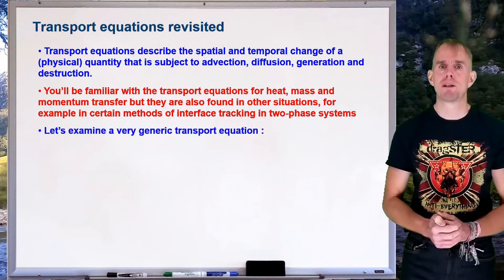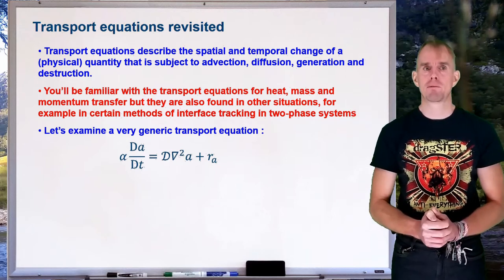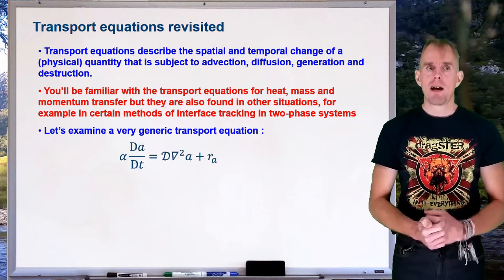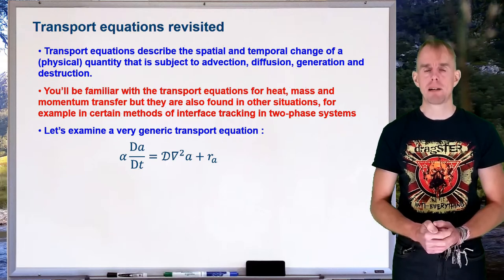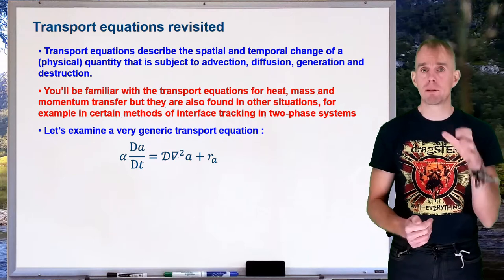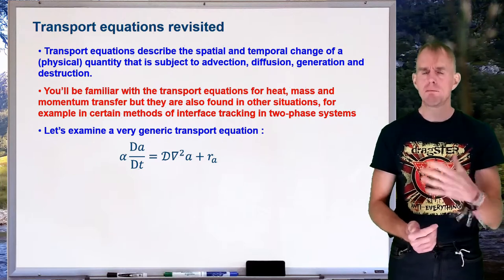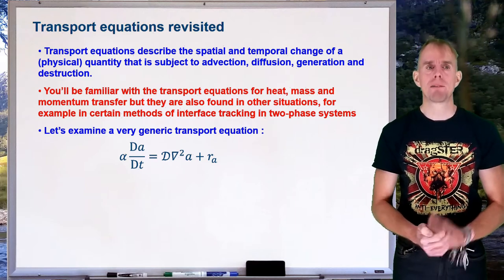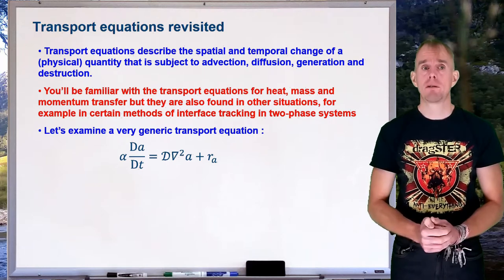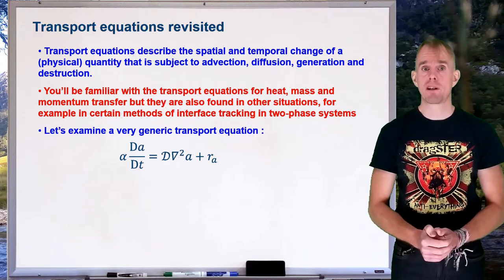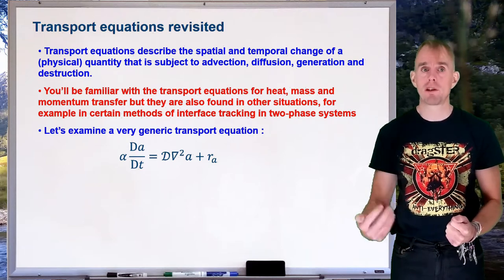Let's put on the whiteboard a reminder of what a transport equation is. There's my transport equation in simple form. On the left-hand side, I have the time variation of a physical quantity A. A can be anything you like, but for the purposes of this example I'm going to assume it's temperature. On the right-hand side are terms that can drive that change in temperature with time — one is a diffusion term and the other is a source or sink term.